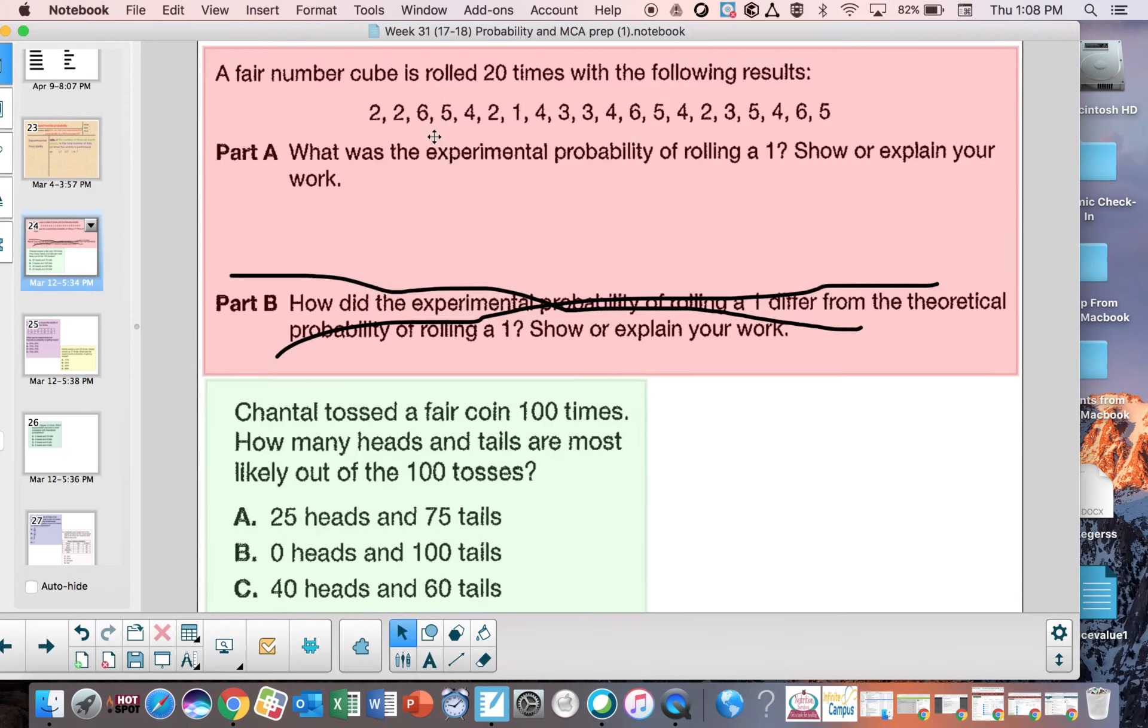Sorry, my smart board is not working, so I cannot do a video like I did before, so we'll have to do it this way. Here, you can see it says a fair number cube is rolled 20 times with the following results. With theoretical probability, if we were to say, what is the probability of getting a 3, we would say it would be 1 out of 6, so 1 out of every 6 rolls, in theory, is what would be expected.